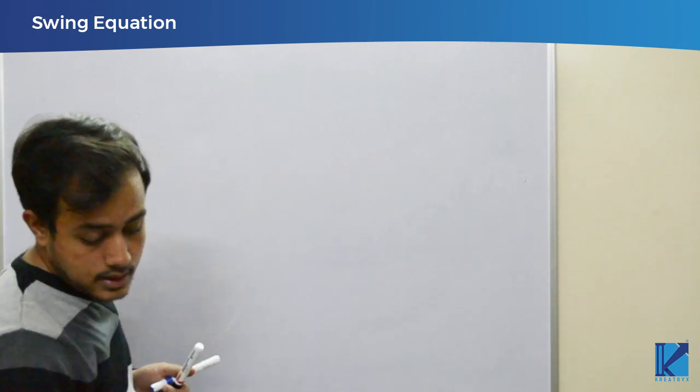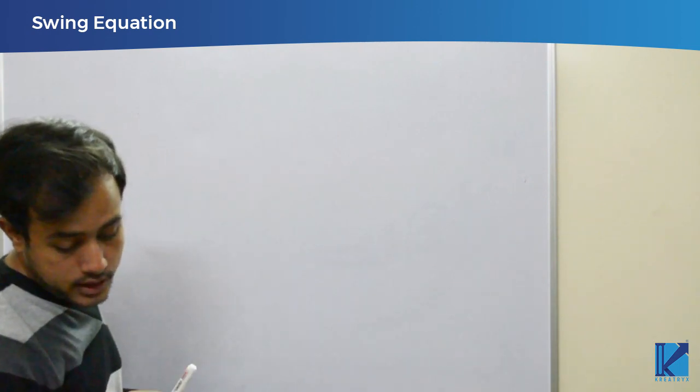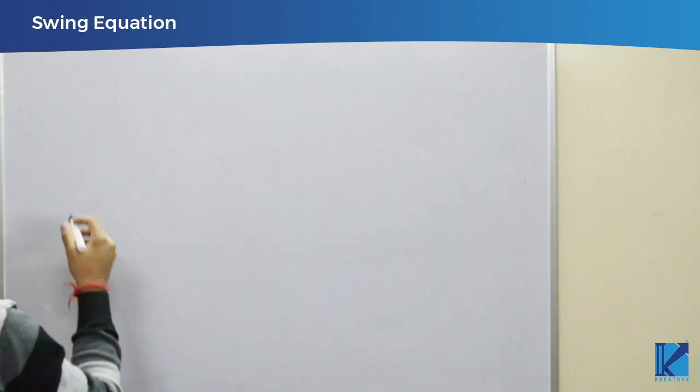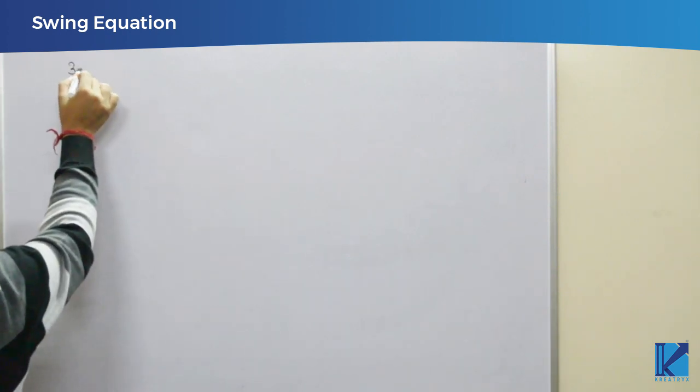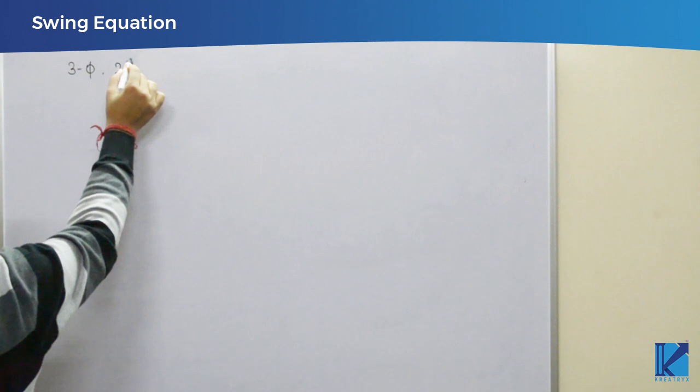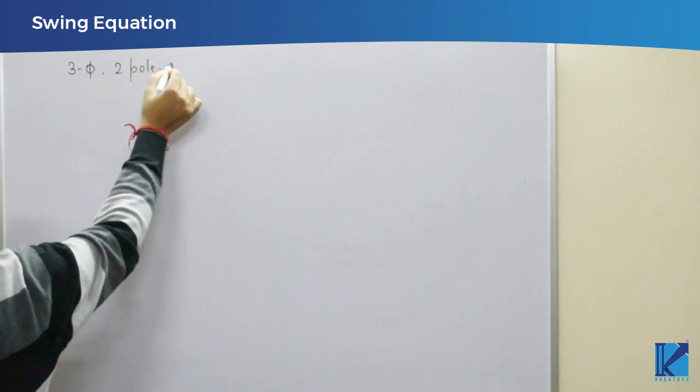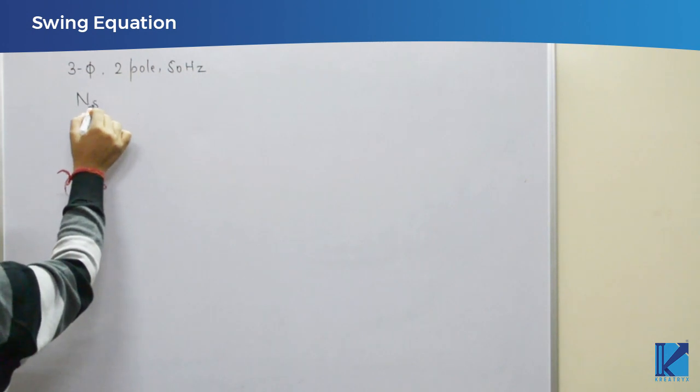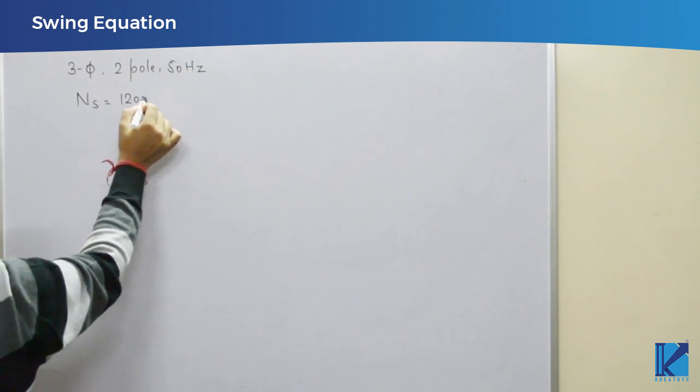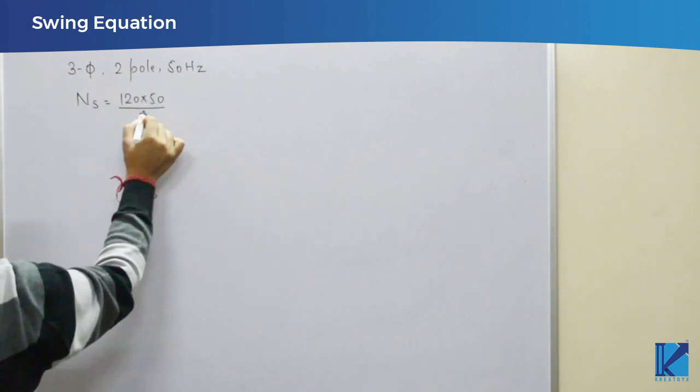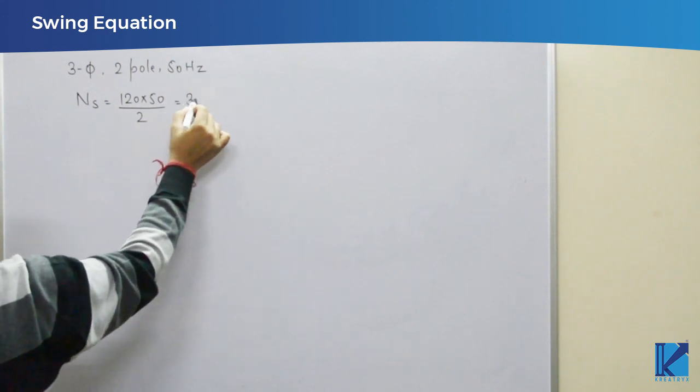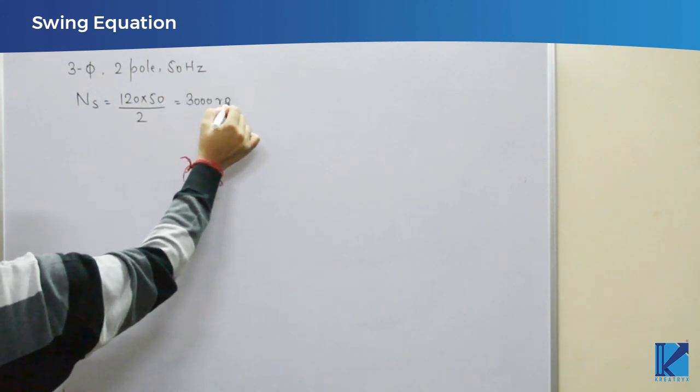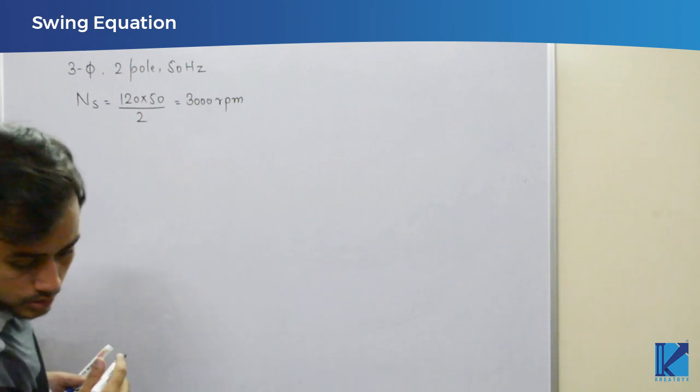See, it says a 3 phase 2 pole 50 hertz synchronous generator. So, it is 3 phase 2 pole 50 hertz. Which means the synchronous speed is 120 into 50 by 2, that is 3000 rpm.